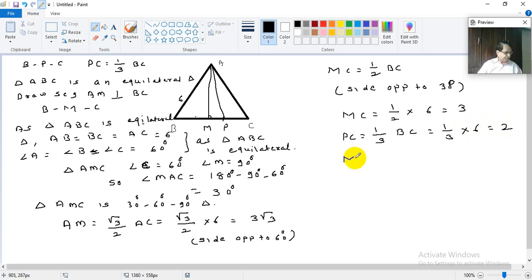And we can say MP plus PC is equal to MC. MC is 3 and PC is 2. So MP will be MC minus PC which is 3 minus 2. So it is 1. MP is 1 centimeter. Now you consider triangle AMP. This is also right angle triangle.